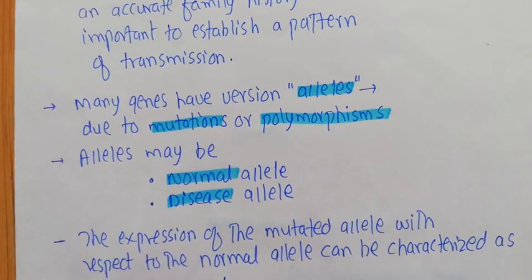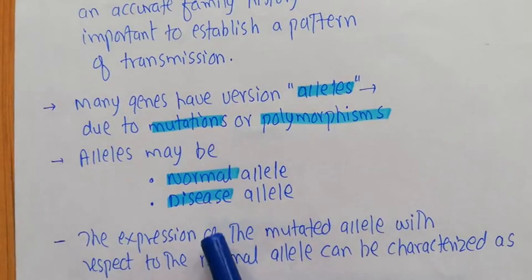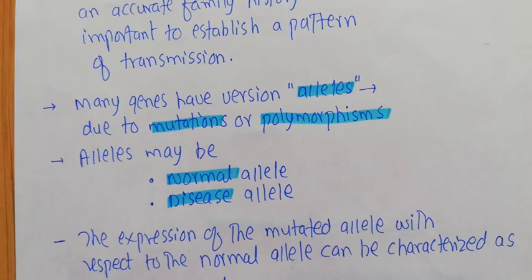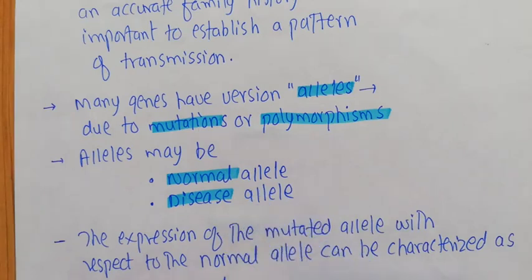When you talk about diseases specifically, you can classify these alleles into the normal allele and a diseased allele. The normal allele simply means the absence of the disease, and the disease allele means that particular individual can have a disease — I say 'can have' because there are different kinds of patterns that we'll be discussing in a while.